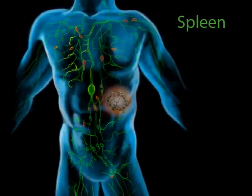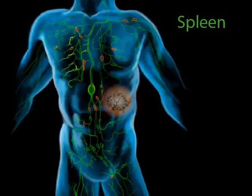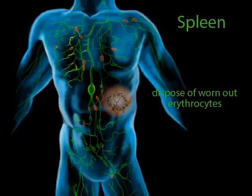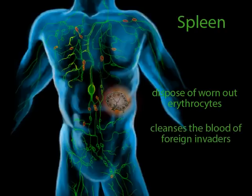The spleen is a significant lymphatic structure with a lot in common with the smaller nodes throughout the body. But unlike the lymph nodes, the spleen does not filter lymph — it filters the blood. As the blood passes through the white pulp of the spleen, foreign invaders stimulate a response from the diffuse lymphatic tissue or the lymph nodules. The spleen also works to clean the blood of worn-out red blood cells. Since red blood cells have a short lifespan, roughly 2 million die every second and must be removed — that's another job of the spleen. Macrophages in the red pulp engage in phagocytosis to remove both foreign invaders and worn-out red blood cells.